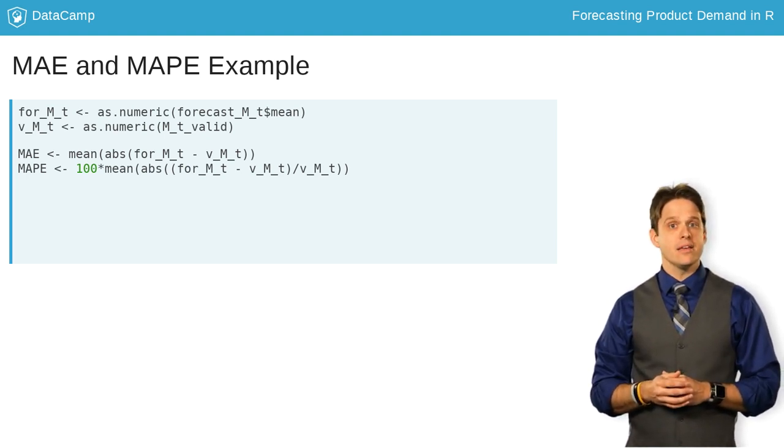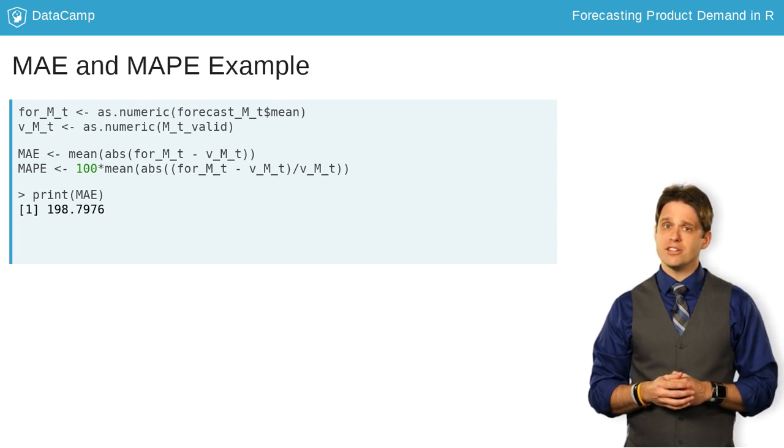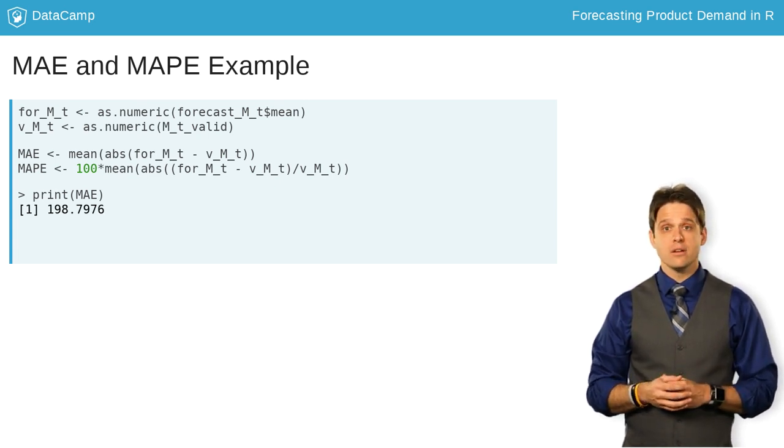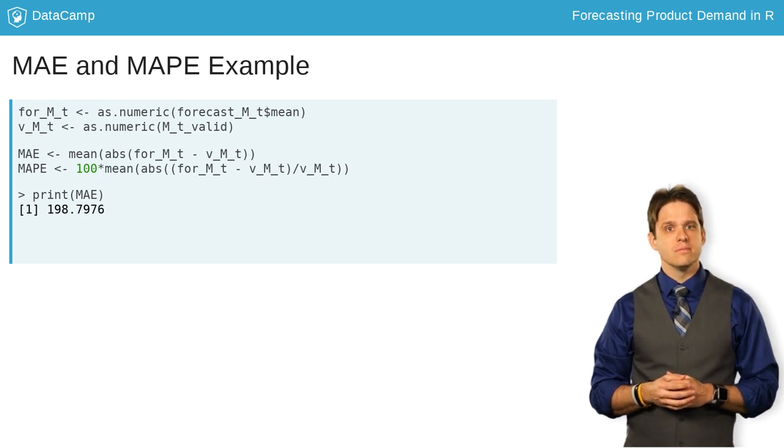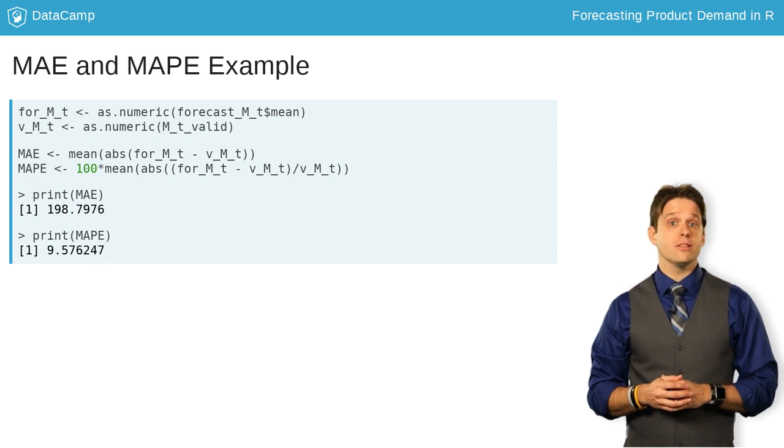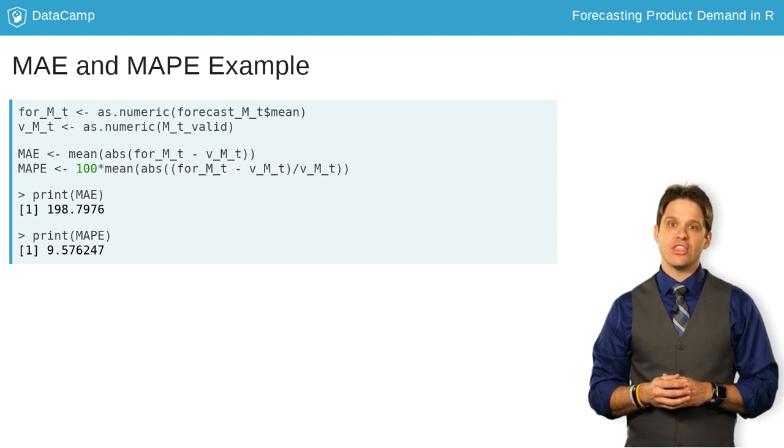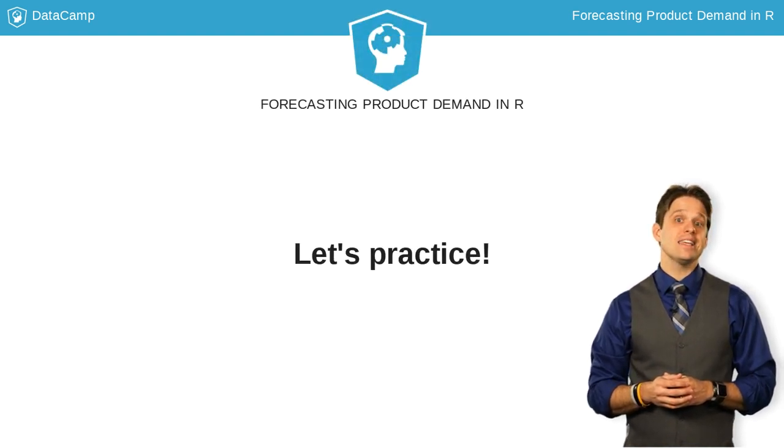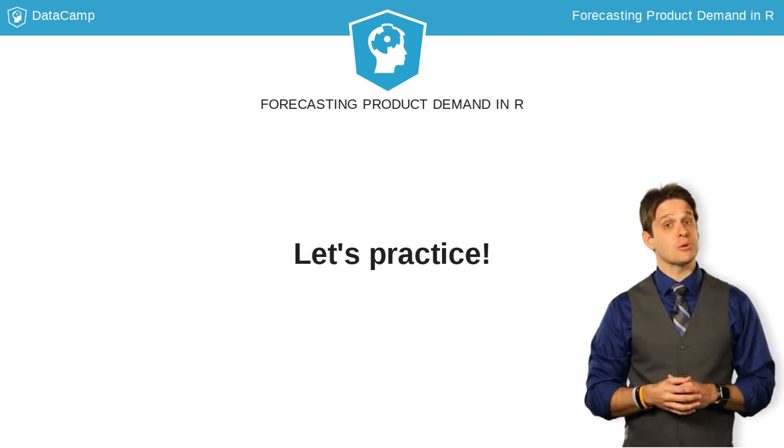Well, for the MAE, we were only off by around 199 products sold on average in the mountain region. Is that good? Not sure. Let's check the MAPE. It looks like we were off by a little more than 9.5% on average. That might put things in better context. Now, let's see how well you can predict the metropolitan region.